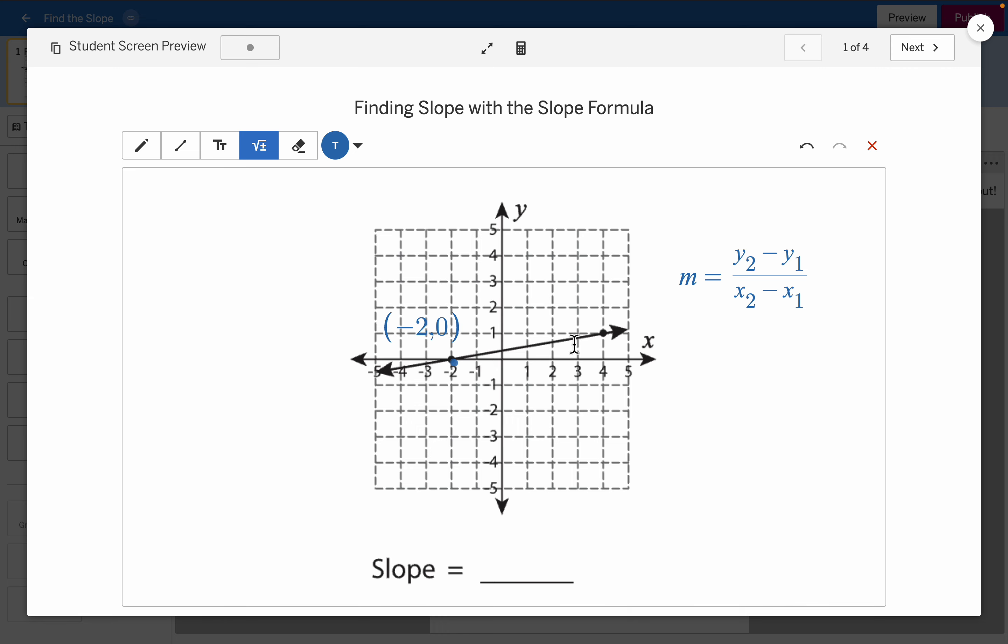Then, we got another point right here. Let me go ahead and identify that one. And that point is, it looks like it is 4 comma 1. Let me move this out the way to make sure. Yeah. So I have my two points.